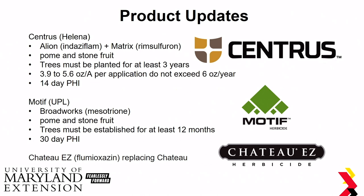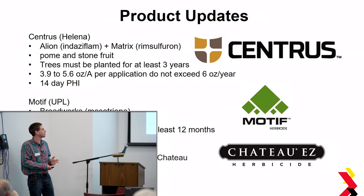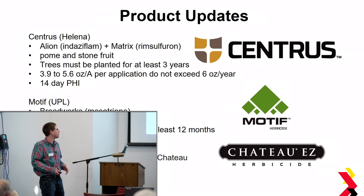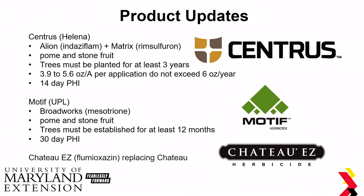A couple of product updates: there's a new product called Centrus from Helena — a combination of Alion and Matrix registered for pome and stone fruit. Trees must be planted for at least three years, application rate is 3.9 to 5.6 ounces per acre without exceeding six ounces per year, and there's a 14-day pre-harvest interval. Another new product from UPL is Motif, which has the same active ingredient — mesotrione, similar to Broadworks. Also registered for pome and stone fruit, trees need to be established for at least 12 months and there's a 30-day PHI. Finally, Chateau (Flumioxazin) is getting a new formulation — Chateau EZ — a liquid formulation replacing the dry formulation.